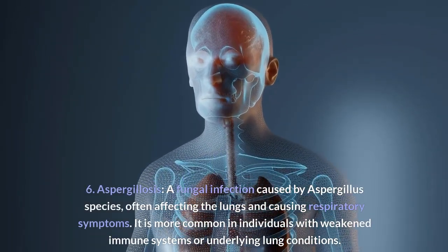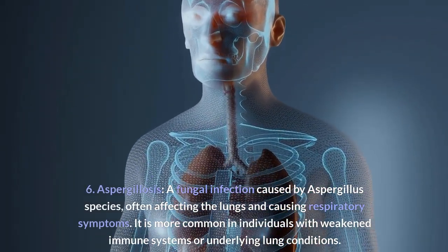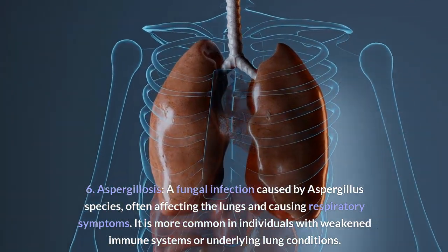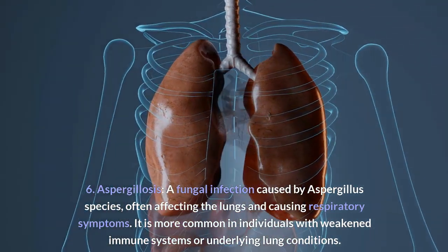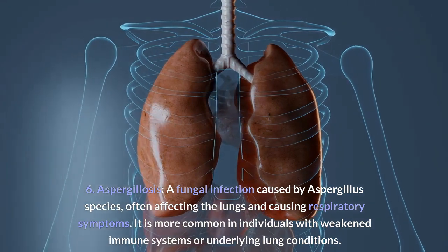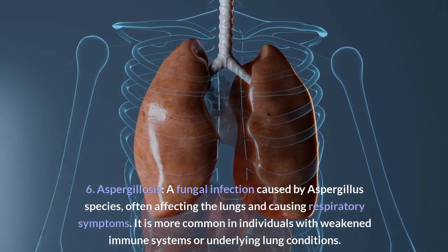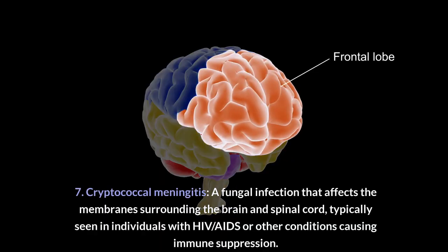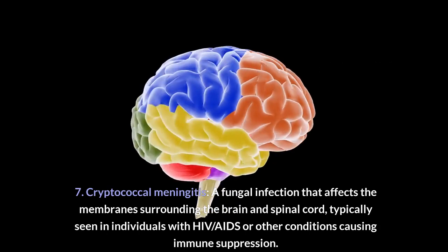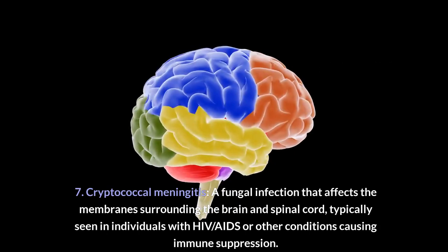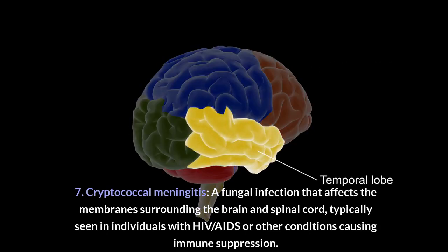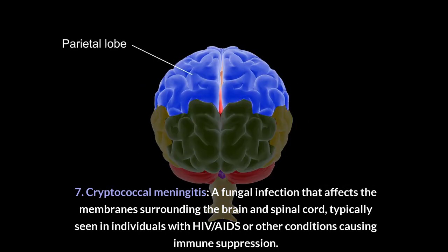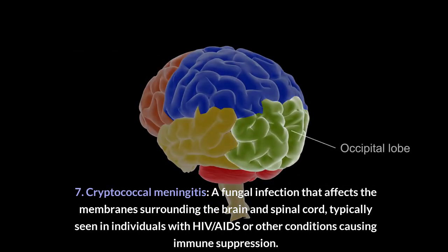Sixth, Aspergillosis: a fungal infection caused by Aspergillus species, often affecting the lungs and causing respiratory symptoms. It is more common in individuals with weakened immune systems or underlying lung conditions. Seventh, Cryptococcal meningitis: a fungal infection that affects the membranes surrounding the brain and spinal cord, typically seen in individuals with HIV/AIDS or other conditions causing immune suppression.